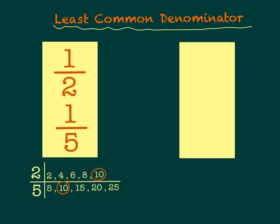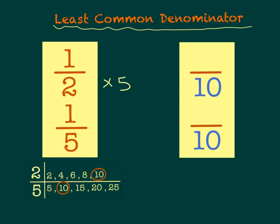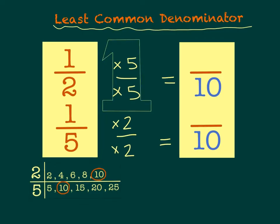The tricky part comes when I want to change the original fractions into new fractions that have the least common denominator as their denominator. In order to do that, I have to think about how I would get from 2 to 10 by multiplying — I would multiply 2 by 5 to get to 10, and multiply 5 by 2 to get to 10. Because I need these new fractions to be equivalent to my originals, whatever I do to my denominator I have to do to my numerator. So 1 times 5 gives me a new numerator of 5, and 1 times 2 gives me a new numerator of 2.